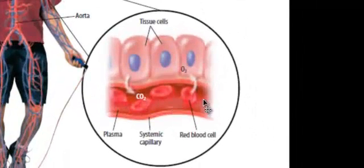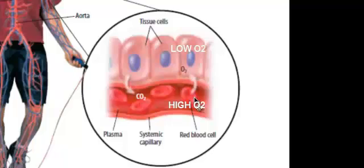Remember, the red blood cells carry oxygen. That is their function. So as a result, because the cells are using up oxygen, we have a high concentration of oxygen in the blood vessel and a low concentration of oxygen in the tissue cells.